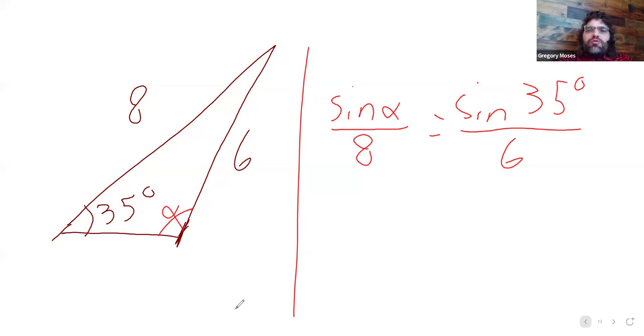And this is a problem we can run into when we're using the Law of Sines to find an angle in this particular case, where we've got side side angle, SSA.